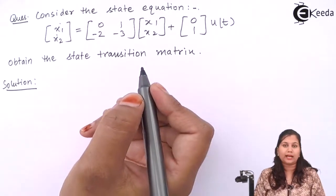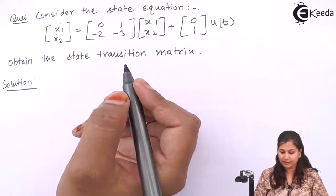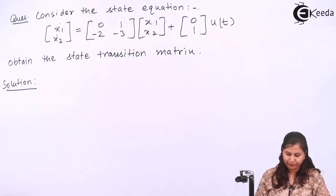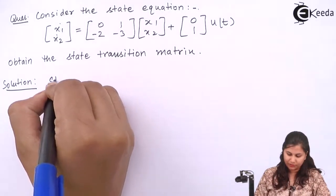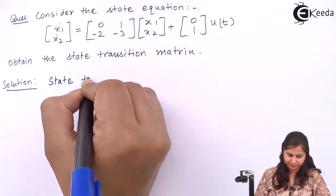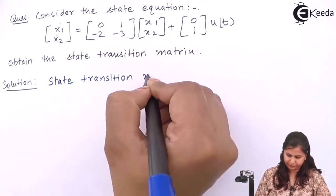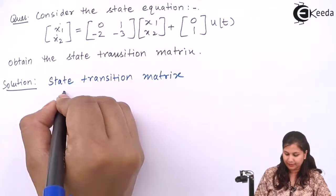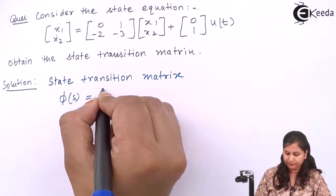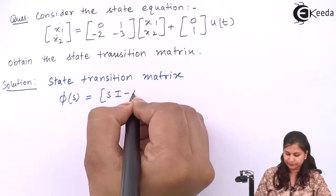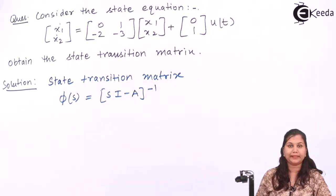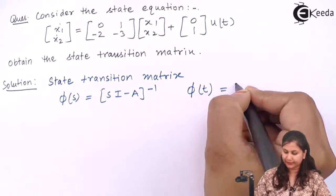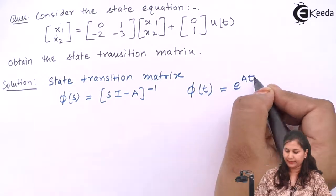The state transition matrix is given by e raised to the power At. So the state transition matrix φ(s) equals (sI - A) inverse, and if we want to calculate φ(t), it is e raised to the power At.